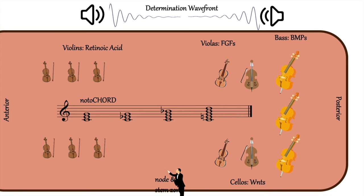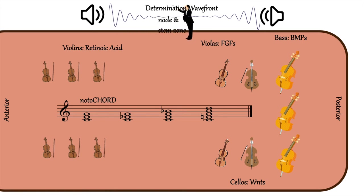Every time the conductor walks in front of the determination wavefront, music — or somites — are created. The music is the representation of somites, since it is the creation of many instruments representing transcription factors, along with their gradients, and many other things. The rate at which the conductor circles the room varies based on the species, resulting in various numbers of somite pairs.